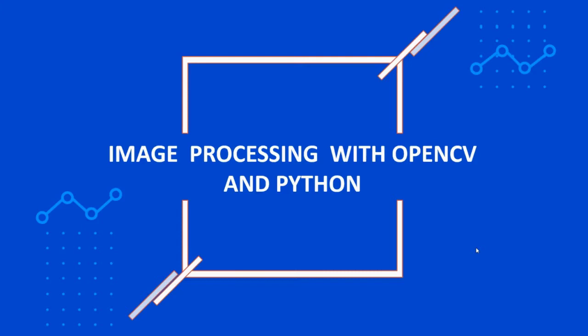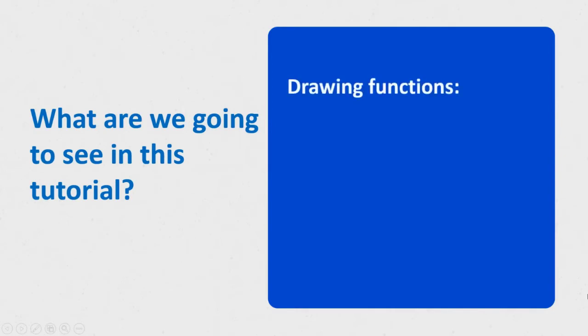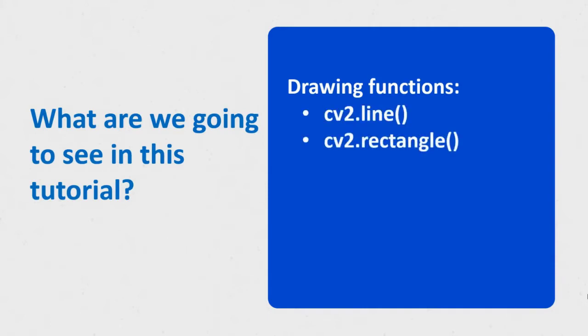Hi everyone, welcome back to this tutorial series on image processing with OpenCV and Python. In this tutorial we'll be looking at two drawing functions: cv2.line and cv2.rectangle. The cv2.line function is used to draw a line in an image, and cv2.rectangle is used to draw a rectangle in an image.